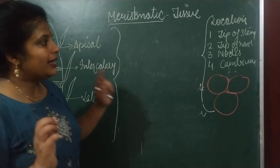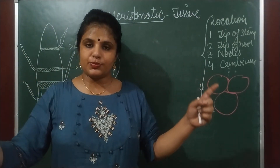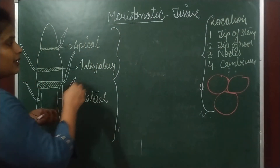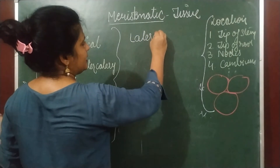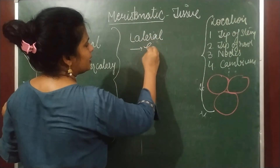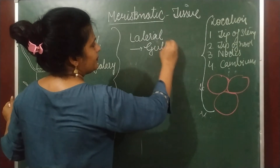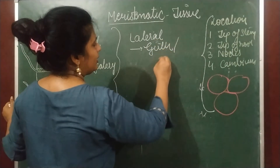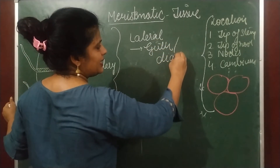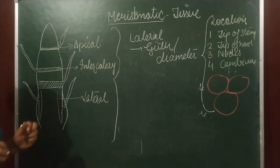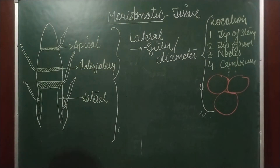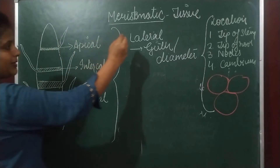The last type is lateral meristematic tissue. Lateral meristematic tissue is responsible for girth — that is, the diameter or thickness of the plant. It is responsible for increasing the thickness, and it forms a specific tissue called cambium. We will understand cambium in more detail, but first, lateral meristematic tissue is present along the lateral sides.